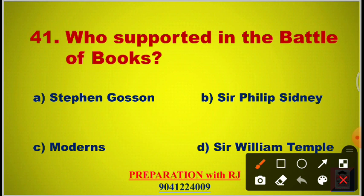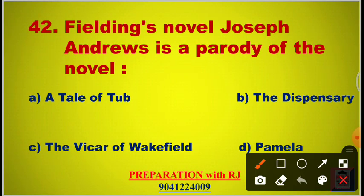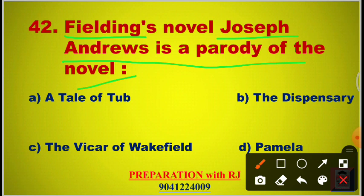Question 41: Who supported the ancients in the Battle of the Books? Options are Stephen Gosson, Sir Philip Sidney, the moderns, Sir William Temple. The answer is D, Sir William Temple. Question 42: Fielding's novel Joseph Andrews is a parody of which novel? Options are A Tale of a Tub, The Dispensary, The Vicar of Wakefield, Pamela. The answer is D, Pamela.